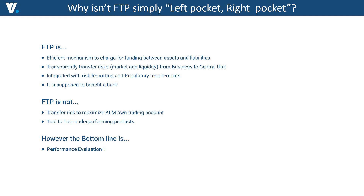What quite often happens, particularly in large international institutions, is that they consider that ALM FTP is simply a right-pocket, left-pocket activity. The idea is that it does not matter if one business unit gets a slightly higher price than another, because the bank is one entity — the NIM for the bank is the same. The differences in internal allocation ultimately net out so that the total NIM for the bank is the same.